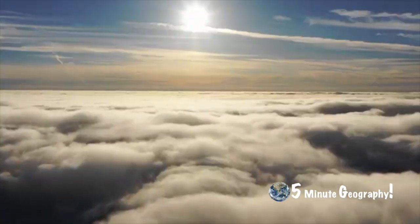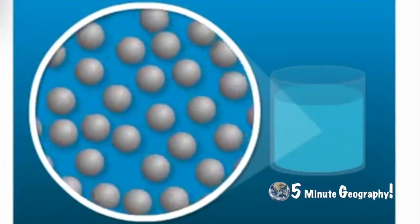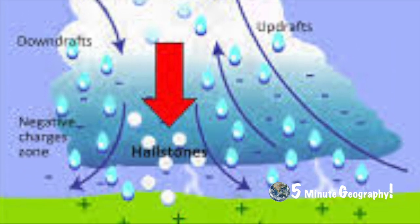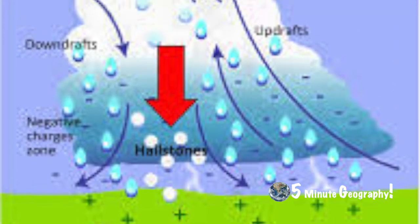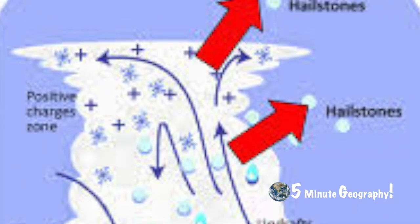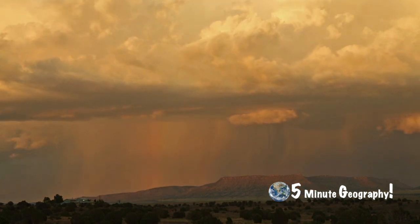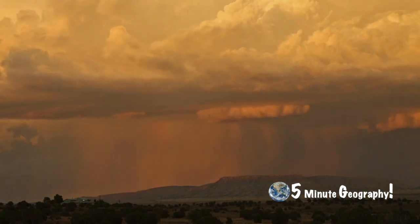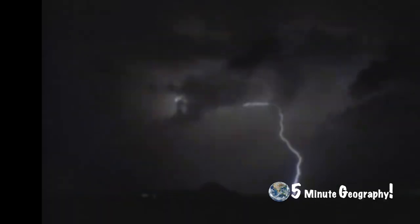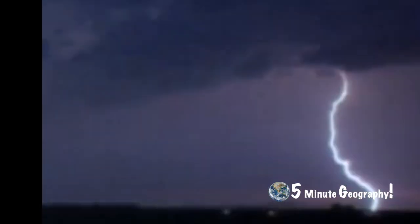As hail moves within the cloud, it picks up negative charges by rubbing against smaller positively charged ice crystals. A negative charge forms at the base of the cloud where the hail collects, while the lighter ice crystals remain near the top of the cloud and create a positive charge. The negative charge is attracted to the earth's surface. When the attraction becomes too strong, the positive and the negative charges come together, or discharge, to balance the difference in a flash of lightning, sometimes known as a lightning strike or a lightning bolt.